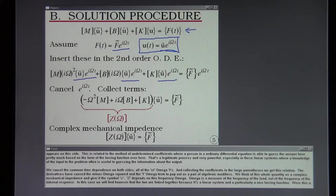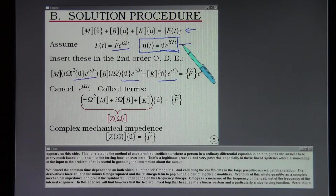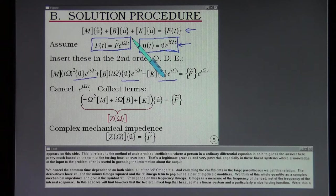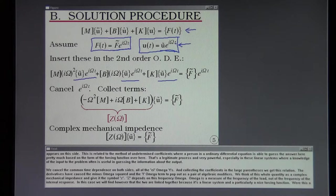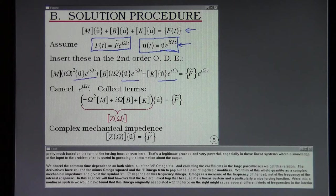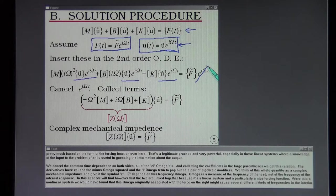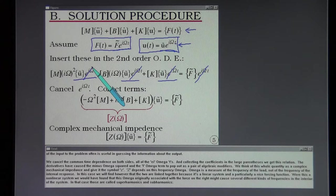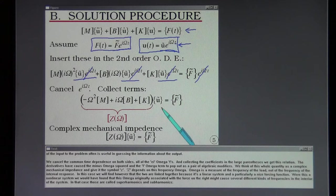This is related to the method of undetermined coefficients where a person in an ordinary differential equation is able to guess the answer here pretty much based on the form of the forcing function over here. That's a legitimate process and very powerful especially in these linear systems where a knowledge of the input to the problem often is useful in guessing the information about the output. We cancel the common time dependence on both sides, all of the e to the i omega t's. And collecting the coefficients in the large parentheses we get this relation.